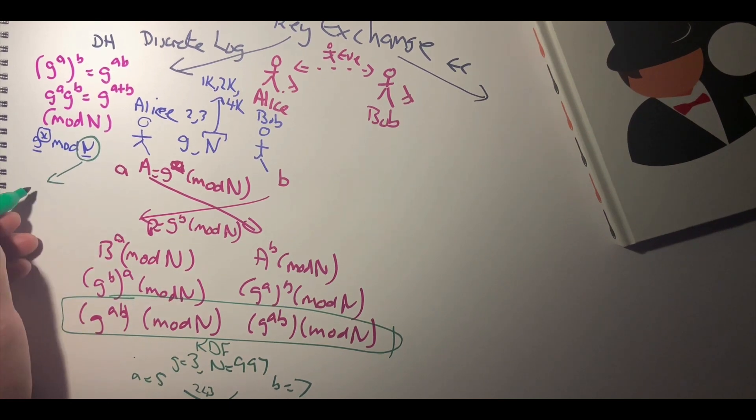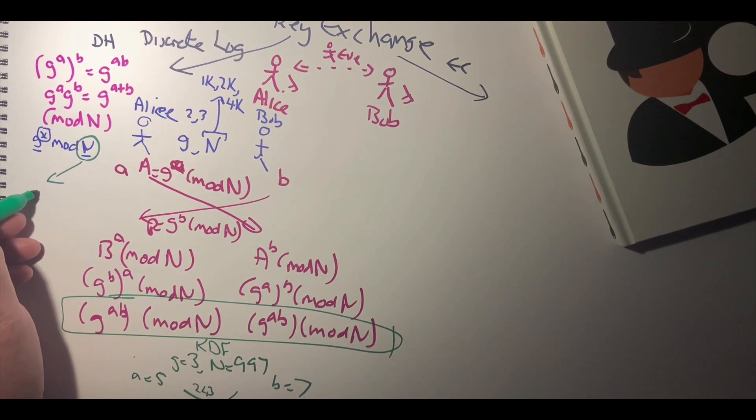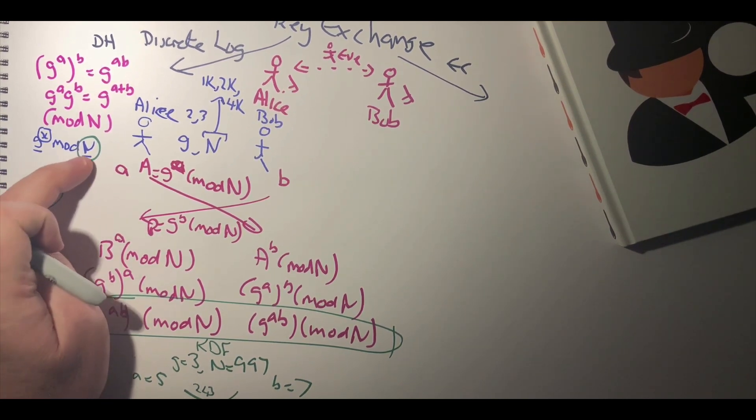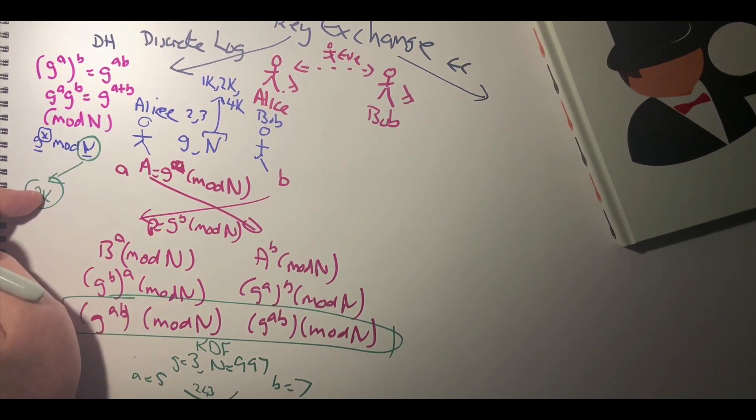Okay, so in practice the values that we're going to use will be very large indeed, typically as I said at least 2000 bits for this prime number here.